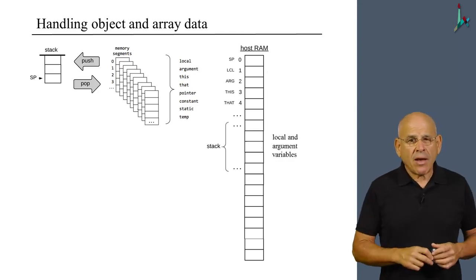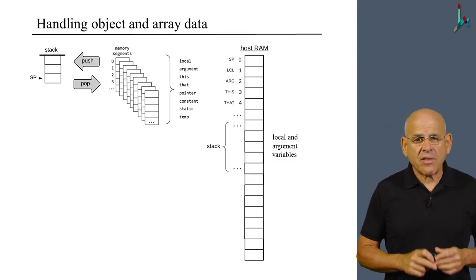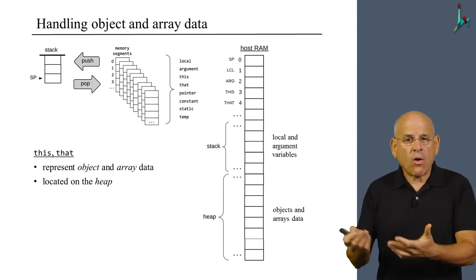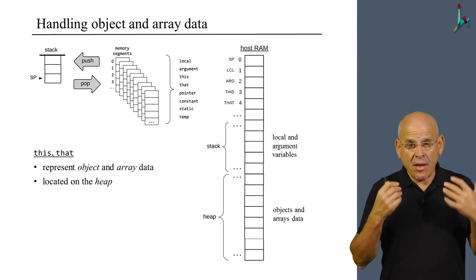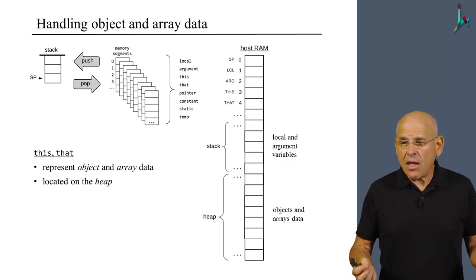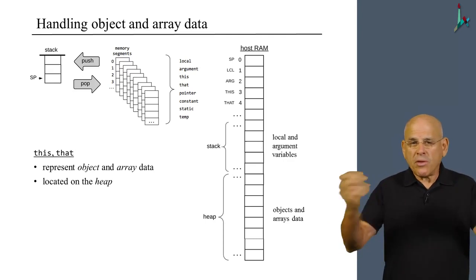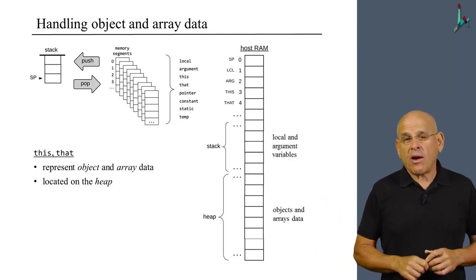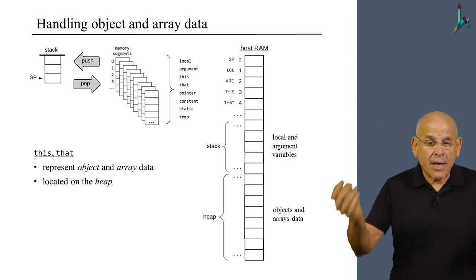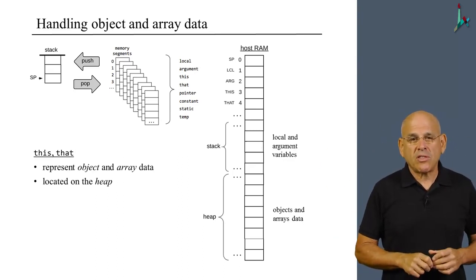How do we use the same architecture to represent object and array data? Well, here the situation is similar but slightly more complex. First of all, we use a different area altogether on the RAM, which is called heap. And on the heap, we record the data of all the objects and arrays that the current program seeks to manipulate. I wish to remind you that in an object-oriented application, you may well have numerous objects and quite a few arrays. You may have dozens, hundreds, thousands, maybe even millions of objects that you have to manage, but overall you may have numerous objects to worry about.